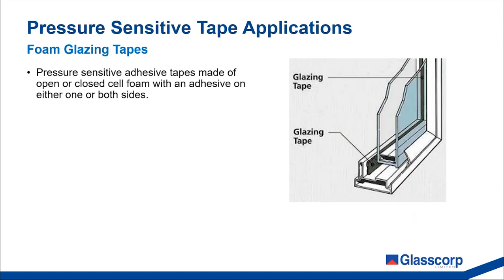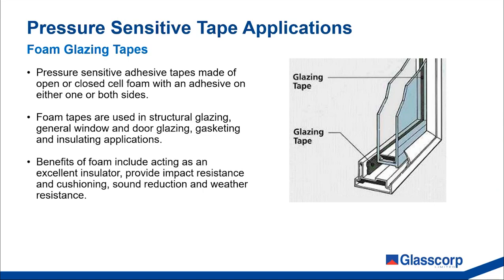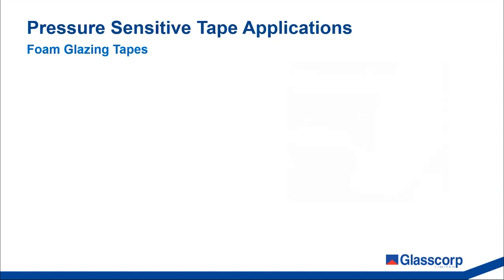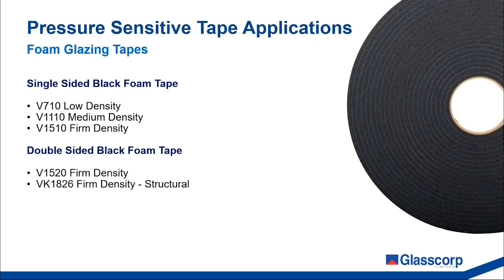Foam glazing tapes are pressure sensitive adhesive tapes made of open or closed cell foam with an adhesive on either one or both sides. Foam tapes are used in structural glazing, general window and door glazing, gasketing, and insulating applications. Foam tapes act as excellent insulators, providing impact resistance and cushioning, as well as sound reduction and weather resistance properties. We supply single-sided foam tapes at different density and hardness levels, as well as double-sided foam tapes with higher density and heavier duty adhesive technology. The VK1826 series has been developed specifically as a spacer for structural glazing applications — the high density allows it to resist compression from heavy glass units and provide a uniform space for structural silicone to be applied.